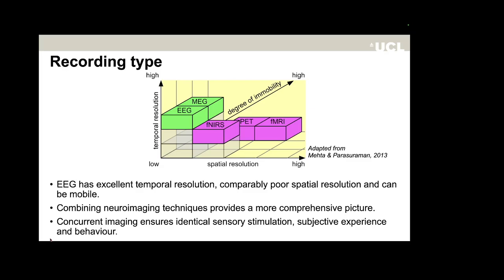Different imaging techniques provide complementary advantages with regard to spatial and temporal resolution. Since no technique on its own can provide a comprehensive picture, the combination of multiple techniques has gained wide popularity. Simultaneous recordings avoid order effects and moreover ensure identical sensory stimulation, identical subjective experience, and identical behavior, guaranteeing that exactly the same brain activity is measured with two separate imaging modalities.